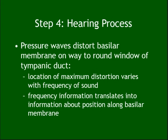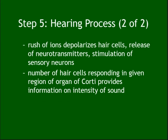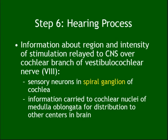The stapes movement at the oval window creates pressure waves in the perilymph, distorting the basilar membrane against the tectorial membrane, bending the hair cells, and creating an electrical signal. Neurotransmitters are released as part of the organ of Corti, and the signal travels to the spiral ganglia — a collection of neuron bodies that relay the signal from the hair cells.